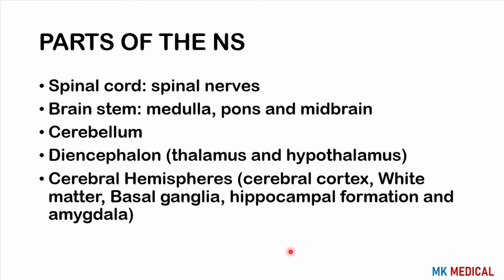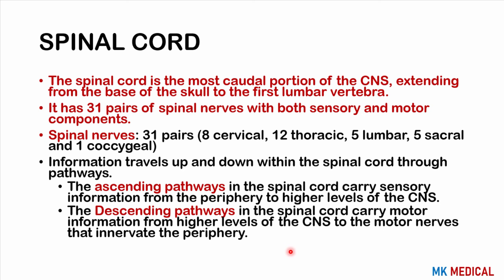We'll look at the spinal cord and spinal nerves, the brainstem functions, the cerebellum, the diencephalon (thalamus and hypothalamus), the cerebral hemispheres, cortex, basal ganglia, hippocampal formation, and amygdala. The spinal cord is the most caudal part of the CNS, extending from the base of the skull to the first lumbar vertebra (L1), consisting of 31 pairs of spinal nerves containing both sensory and motor components — making them mixed entities.